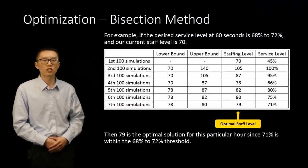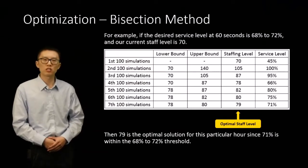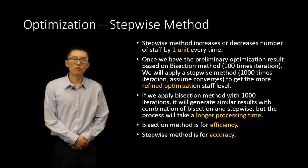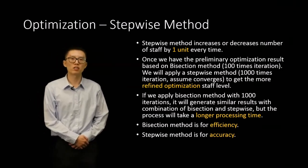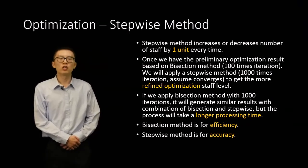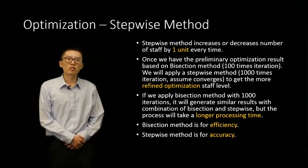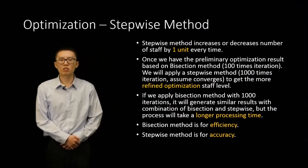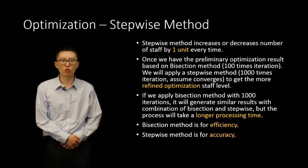The bisection method is based on 100 simulations. We increase the number of simulations in the stepwise method to 1,000 iterations to get a more refined result. Once we have the preliminary optimization result from the bisection method, we apply the stepwise method, which increases or decreases the number of staff by one unit at a time. If we applied the bisection method with 1,000 iterations we would get a similar result, but it would take longer. So the bisection method is for efficiency, and the stepwise method is for accuracy.